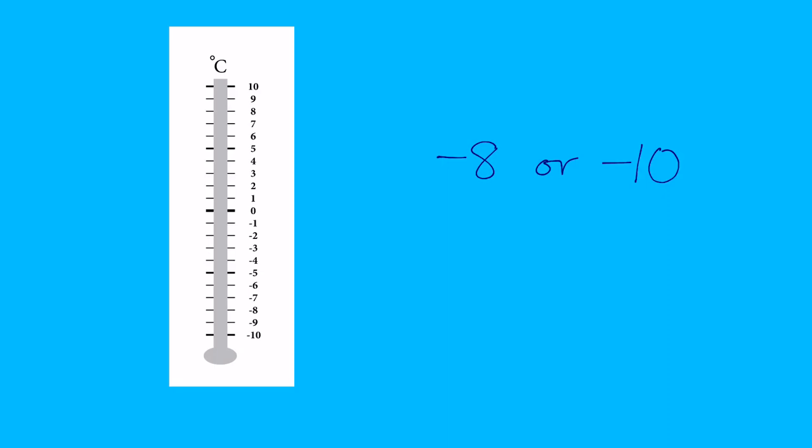Let's have a look at these numbers and see if we can work out which one is bigger. So we've got minus 8 or minus 10. Let's look at our thermometer. So I've got minus 8 here and minus 10 here. I can see that minus 10 is further away from 0, so that's going to be colder on my thermometer. Don't fall into the trap of thinking, because 10 is a bigger number, then that's going to be the bigger. The actual bigger number here is minus 8, because it's not as far away from 0.